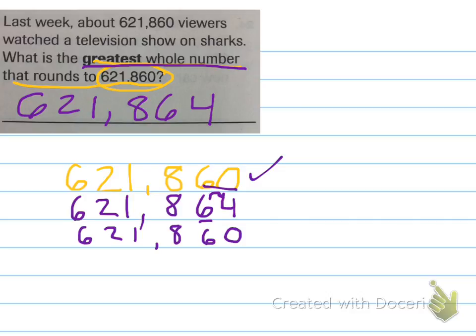These types of problems are a little tricky, because you have to think of a number that would round to this, right? You have to pay close attention, and then think, if I have to think of the greatest number, it would obviously be above, but it'd still have to round down.